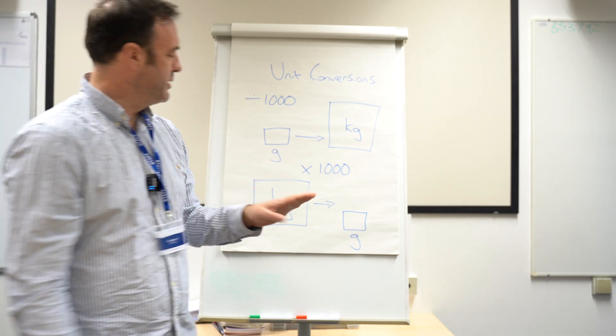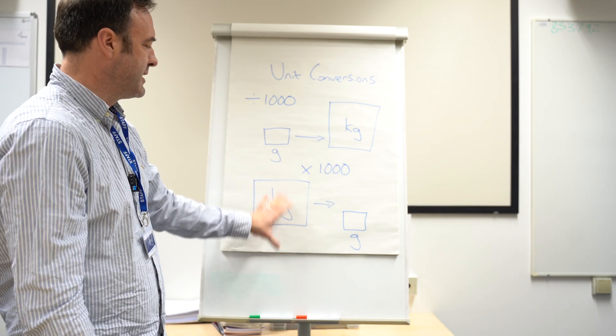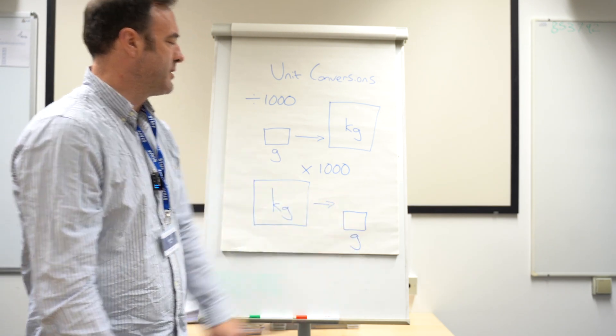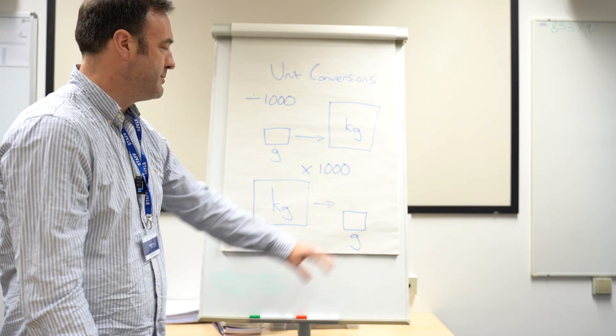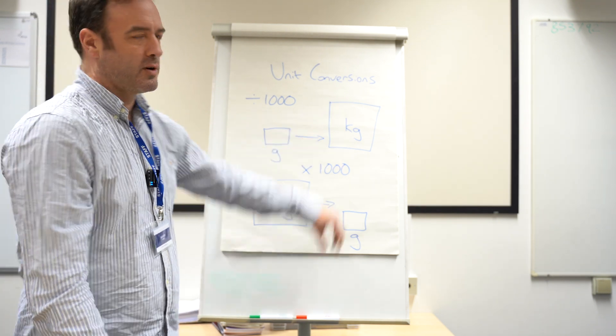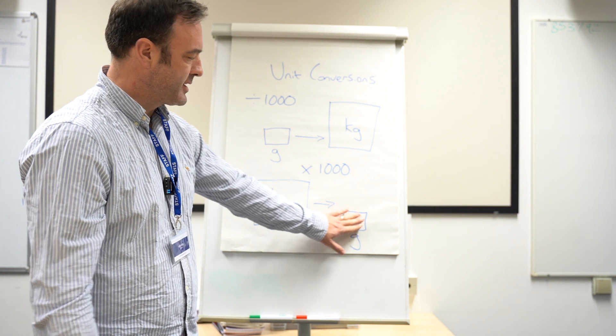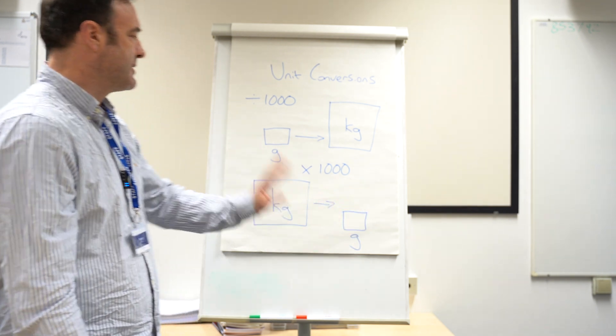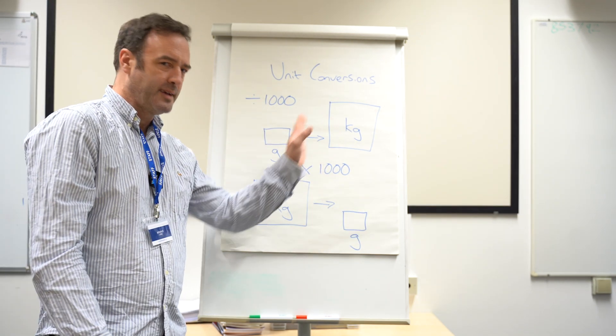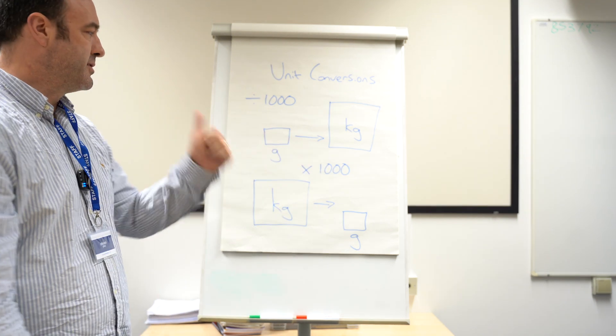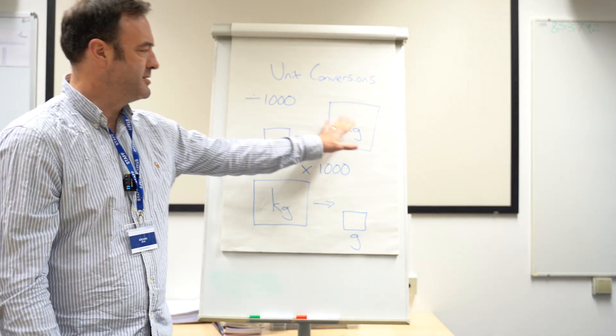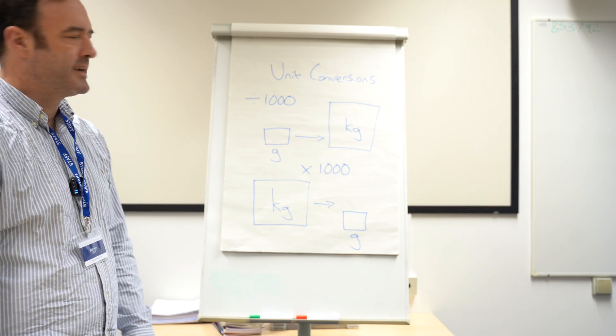If, however, we were going to go from a big unit like a kilogram down to a small unit like a gram, we would multiply by 1000 because we would end up with more of these at the end. Now this is a common thing that kids get mixed. Do they multiply or do they divide? So I get them to draw this diagram out so they can get it into their heads.